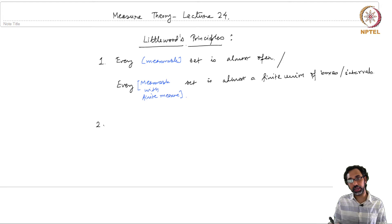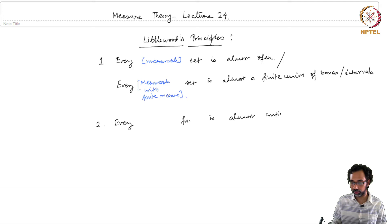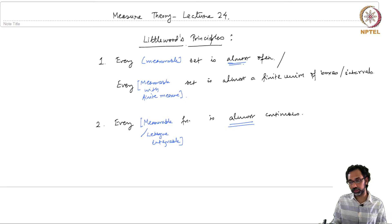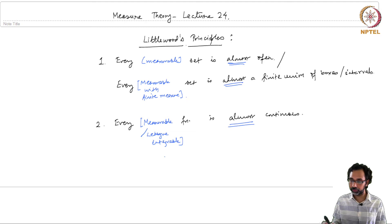Littlewood's second principle says that every function is almost continuous. The catch is that it should be a measurable function, or it also works if it is a Lebesgue integrable function. Once we define what a Lebesgue integrable function is, we will see that these functions are almost continuous. We have to make precise what is meant by 'almost,' but it is up to some epsilon or finite tolerance in the measure.